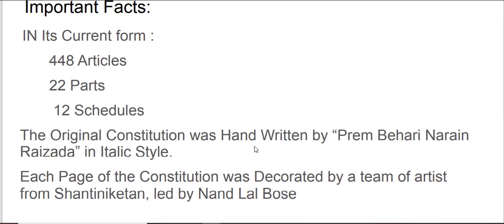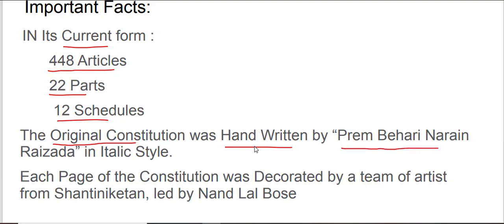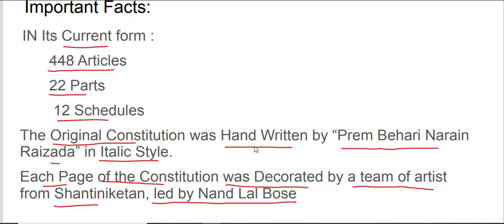In its current form, the Constitution has 448 articles, 22 parts, and 12 schedules. The original Constitution was handwritten by Prem Bihari Naren Raizada in italic style — he was a calligrapher. Each page of the Constitution was decorated by a team of artists from Shanti Niketan, led by Nandalal Bose.